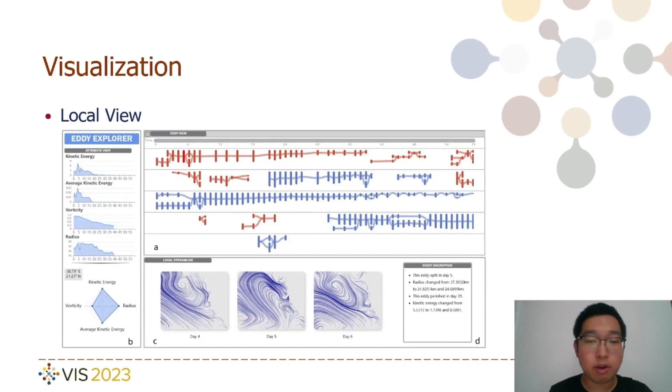In the local view, we focus on displaying the detailed life cycle and evolutionary process of specific event-driven eddies. This view provides users with a clear and comprehensive visualization of events such as merging and splitting that occur as a single eddy evolves from its inception to extinction. The user can easily observe these critical events at various timestamps within the eddy's lifecycle. Additionally, by clicking on a specific timestamp or eddy associated with crucial events, users can access corresponding streamline images, textual descriptions, and nearby timestamp information for in-depth exploration.